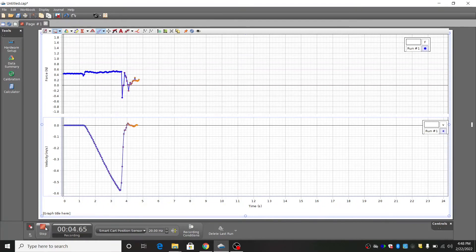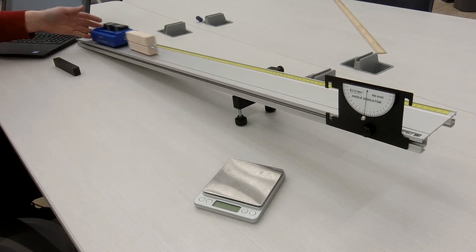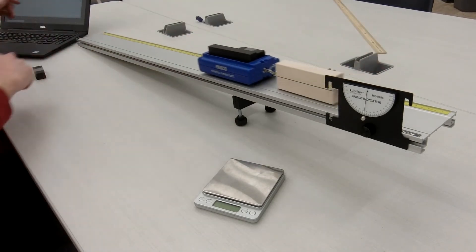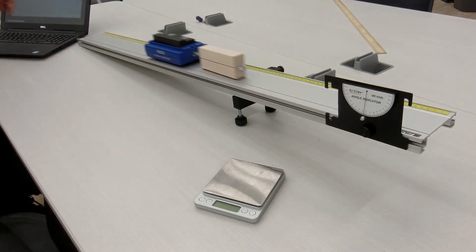Once you've calculated the coefficient of kinetic friction for the slider from your data, use this to predict what the acceleration of the cart will be if you add different amounts of mass to the cart and or the friction slider. Repeat the experiment with these new amounts of mass to verify your prediction.